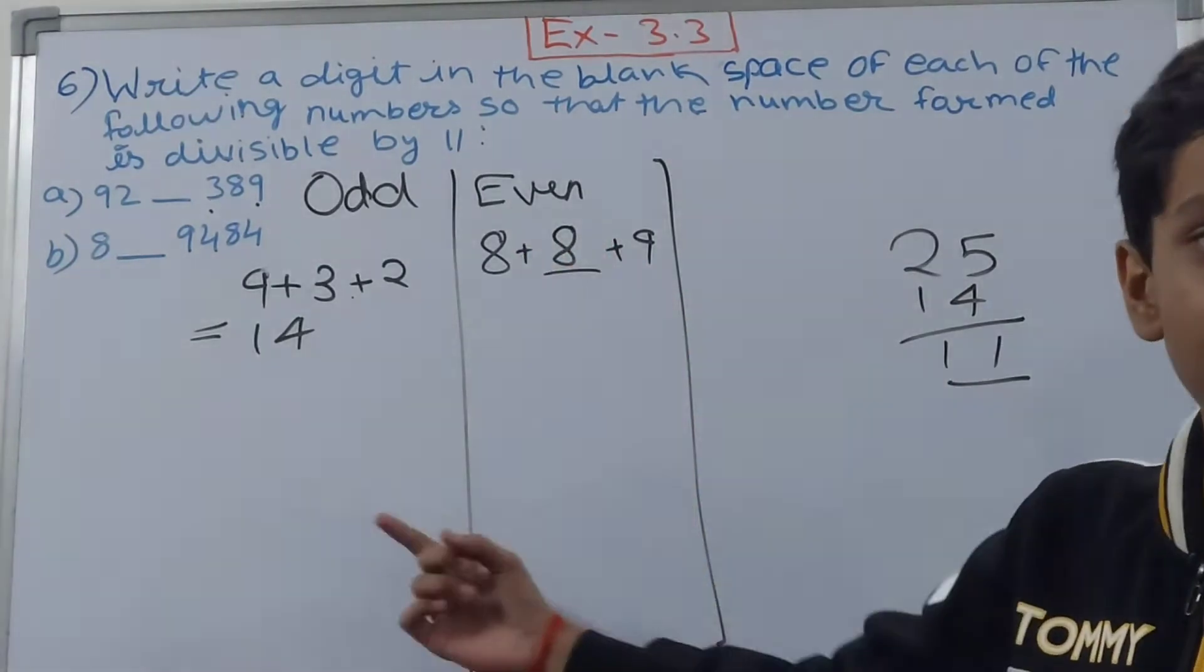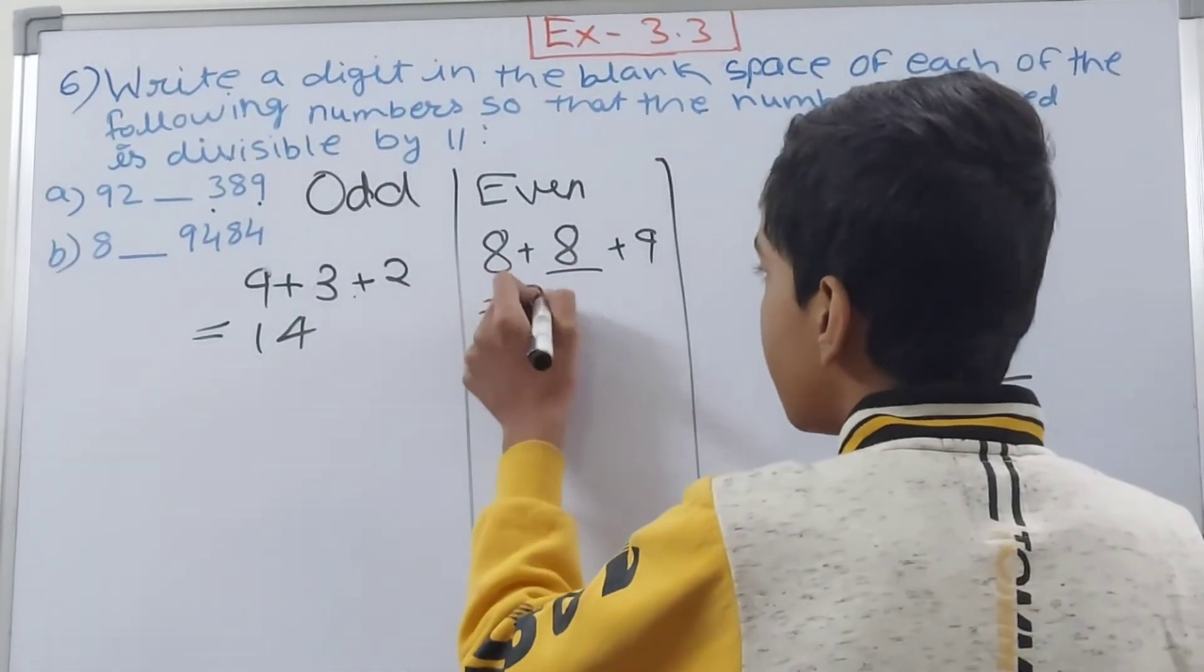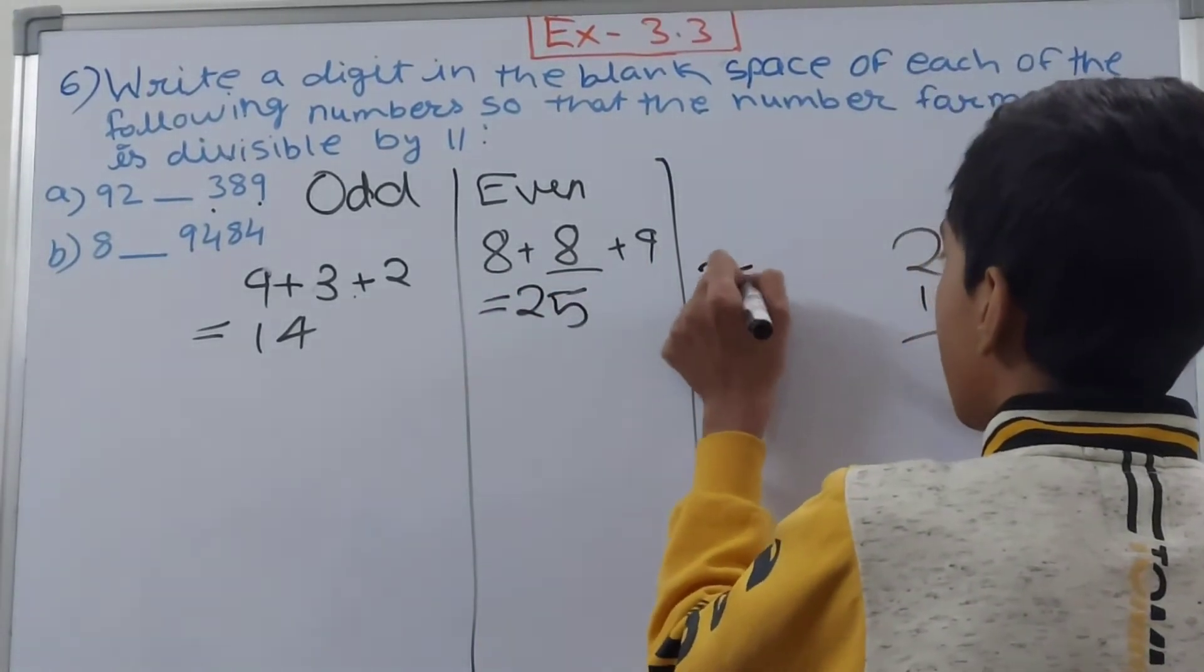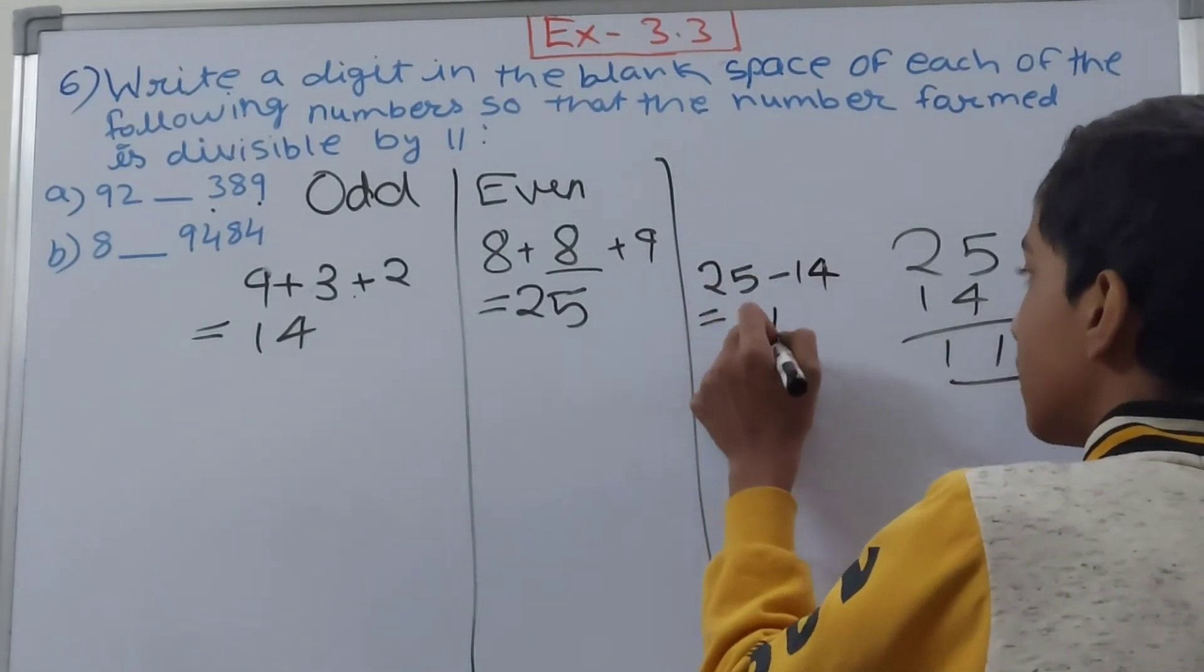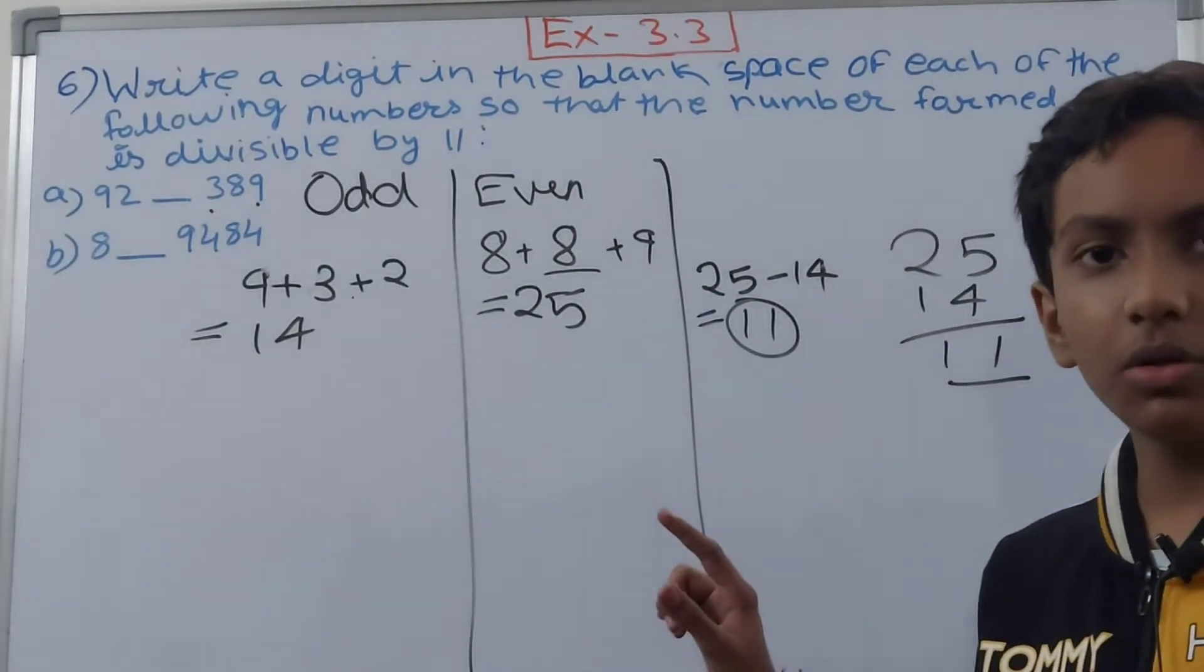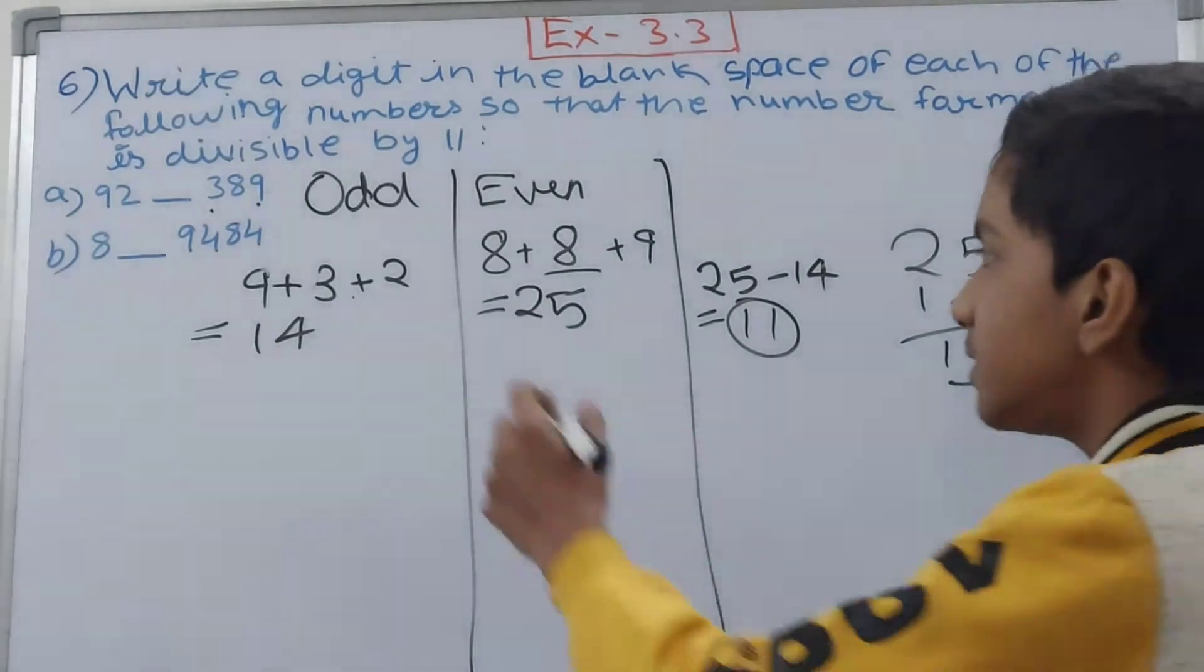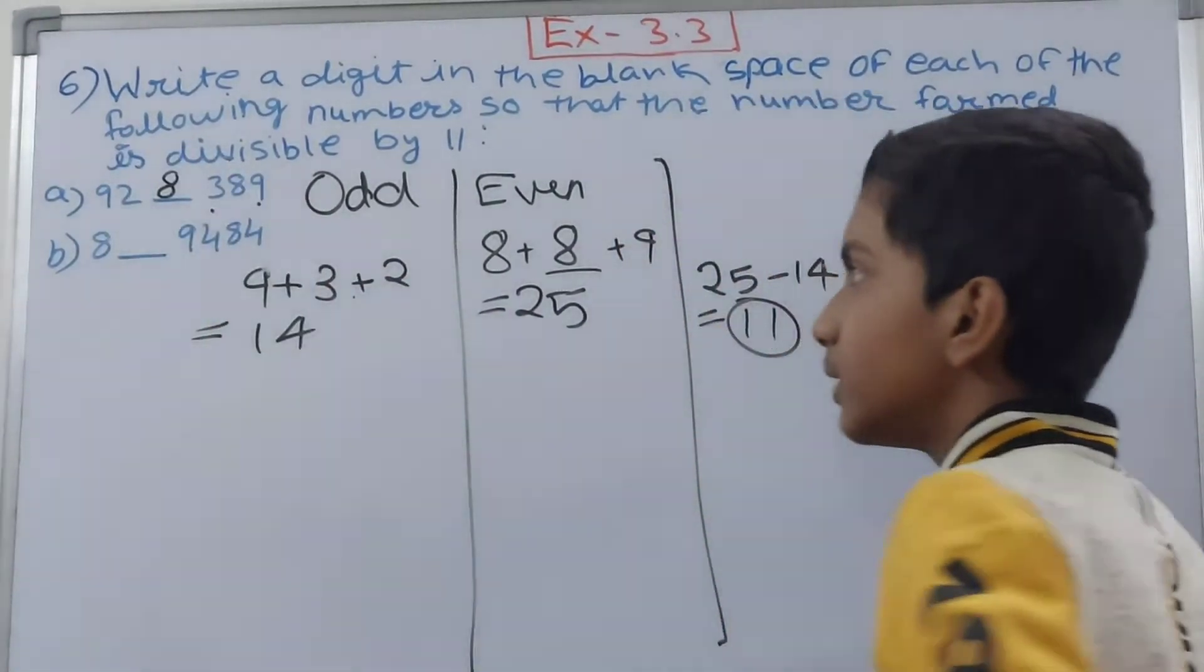So 8 plus 8 is 16 and plus 9 that will be 25. Now 25 minus 14, sorry it is 25 minus 14, so that is 11. And I told you the difference should be 0 or a multiple of 11, and 11 is here so it is divisible. That means the digit which will come over here is 8. This is how we have completed the part a.